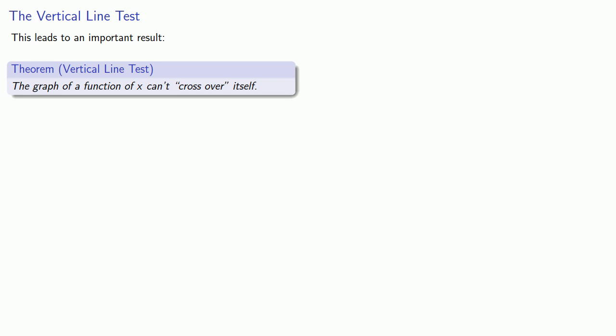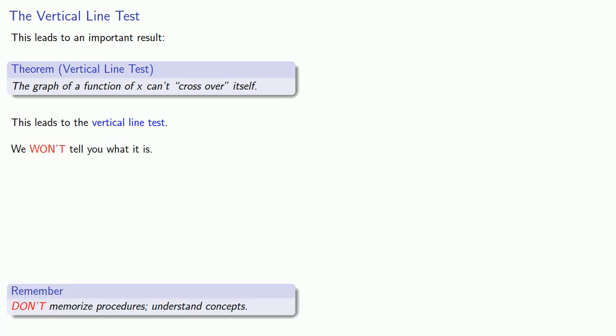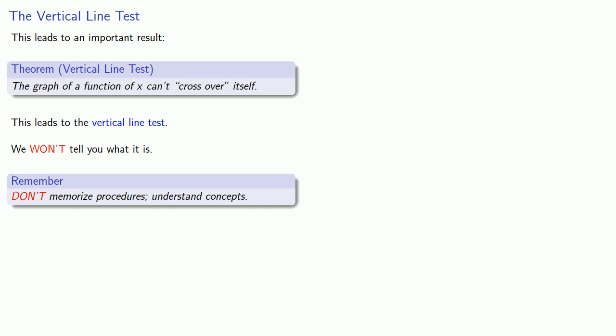This leads to an important result, sometimes called the vertical line test. The graph of a function of x can't cross over itself. In other words, we can't have a portion of the graph that's above another portion of the graph. And we won't tell you what that is because it's important to remember, don't memorize procedures, understand concepts. The important idea in this case is that graphs that do cross over themselves have multiple values of y for the same value of x.